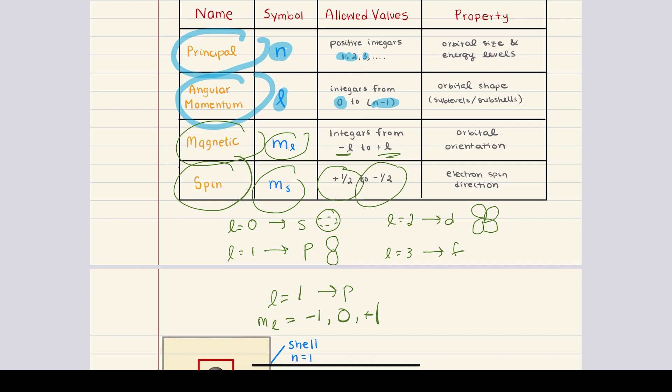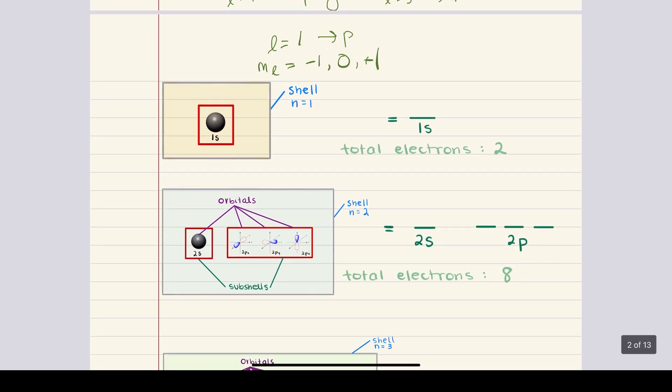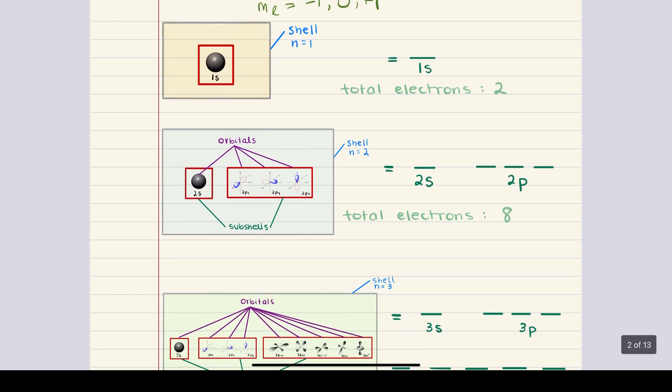Now that we understand the general rules for quantum numbers, let's begin to visualize all of the available orbitals that electrons can fill. Once we understand that, we can really begin to comprehend how electrons are organized in an atom. Let's start by looking at the first few shells.